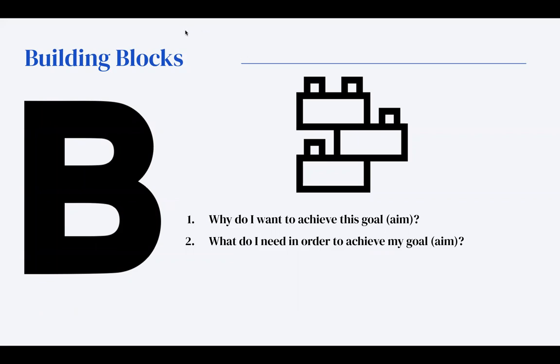So the next thing is B. So you could say B is for blocks or for building blocks. So what are building blocks? Building blocks are the things you need to achieve your goal or your aim, right? So I'm going to ask, this time I'll ask Ruby, when you started, what were the things you identified that you needed to achieve this goal of learning how to code?